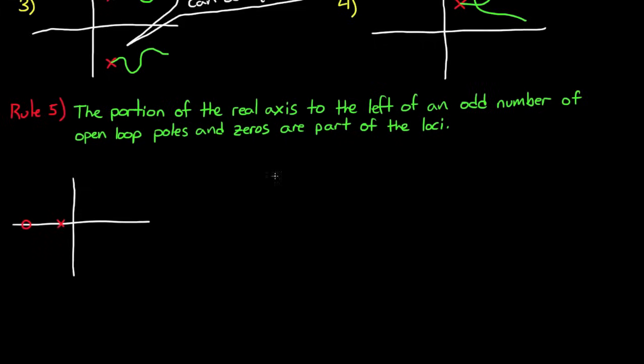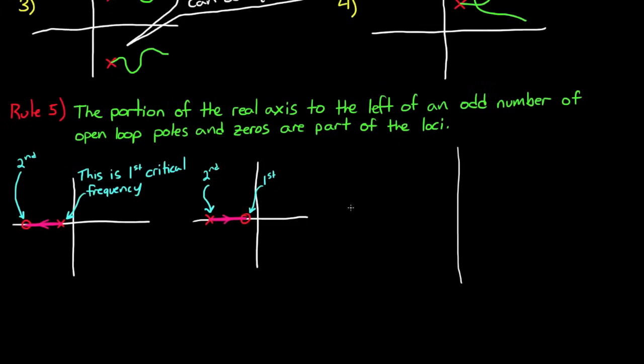The easier way of stating this rule is really just saying that every other space on the real axis between critical frequencies is part of the root locus. In this first example, I have two critical frequencies, a pole and a zero, on the real axis. And so the root locus exists to the left of the odd numbers, or the first one only. Now if I swap the location of the pole and the zero, these are still the first and second critical frequencies, so the line still exists between them, it's just it's going to go to the right now, since it will go from an open loop pole to an open loop zero.